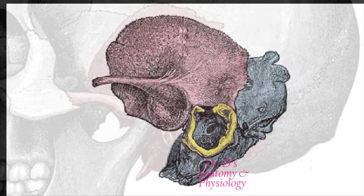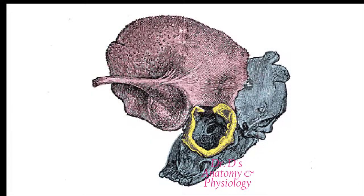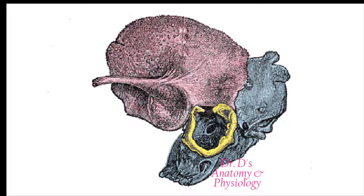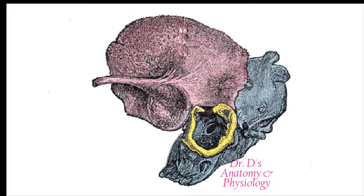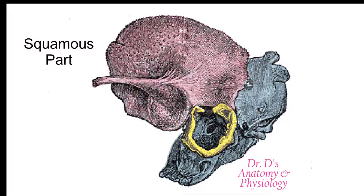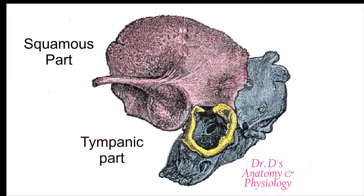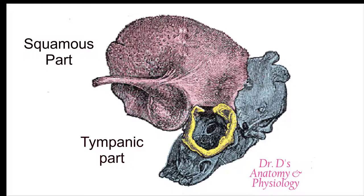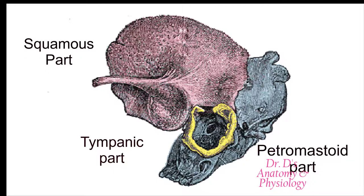Looking at how these three parts develop: this bone develops from ossification centers — it's a very complicated bone that develops from eight different ossification centers. At infancy we can see three parts: the pinkish part is the squamous part, the yellow part is the tympanic part which will further develop into the external auditory canal, and the blue part is going to give us the petromastoid part of the bone.